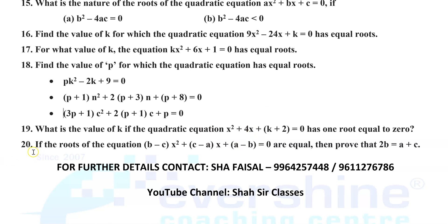Next, question 20: if the roots of the equation (B − C)x² + (C − A)x + (A − B) = 0 are equal, then prove that 2B = A + C. Since it is already given that the roots are equal, use that condition to prove that 2B = A + C.